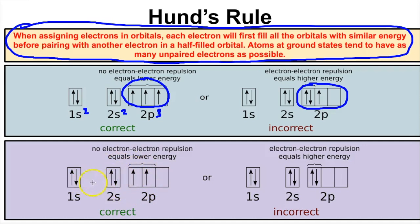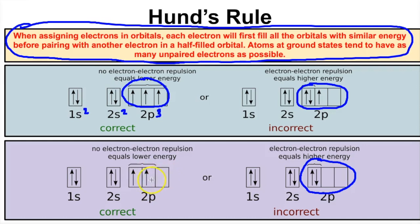Here is the correct orbital diagram for carbon — we can tell it's carbon because it has six electrons. The incorrect version has two problems: first, Hund's Rule was not followed, as we needed to place one electron in each orbital before putting a second in any box. Second, there is a down arrow where there should be an up arrow. According to Hund's Rule, if you start with one up arrow, all single electrons in their boxes must also spin in that same direction.